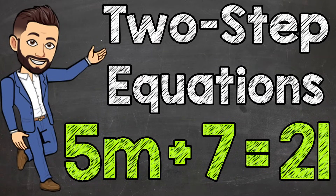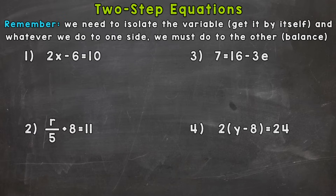Welcome to Math with Mr. J. In this video I'm going to cover how to solve two-step equations. We have four example problems on your screen that we're going to go through together. When we have an equation with a variable, our goal is to isolate that variable — get it by itself in order to solve. Whatever we do to one side we must do to the other side of the equation. We have to keep it balanced.